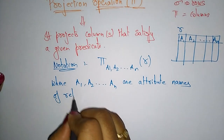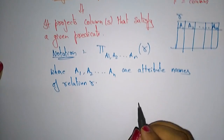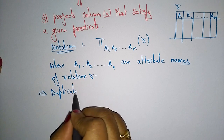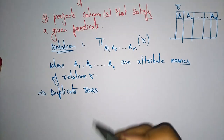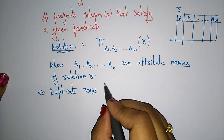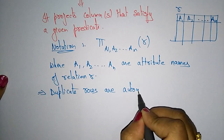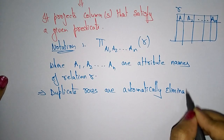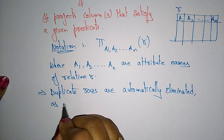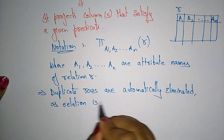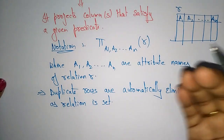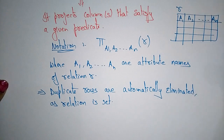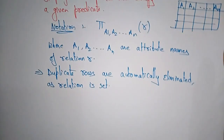The main feature of the projection operator is that duplicate rows that are present are automatically eliminated. Since a relation is a set, whatever duplicate rows are present — the same rows — those are automatically eliminated, and the result will be a proper set.